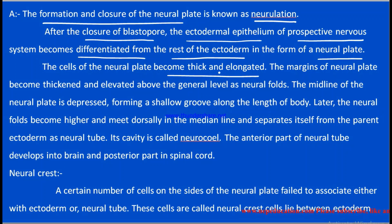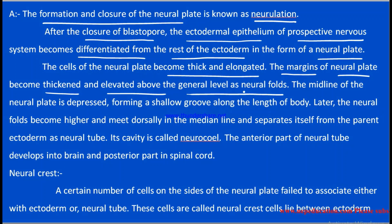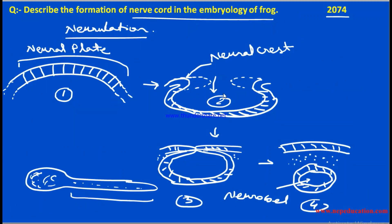This part of the ectoderm becomes thick and elongated to form the neural plate. The junction point of the neural plate becomes thick and elevated above the general level, forming neural folds — also called neural crests. The midline of the neural plate is depressed to form a shallow groove along the length of the body.